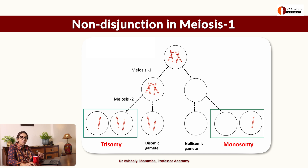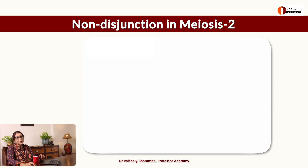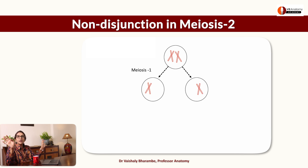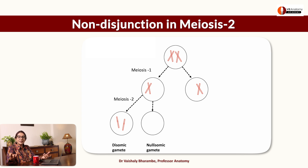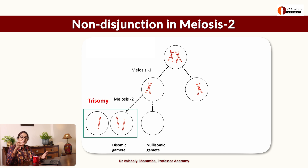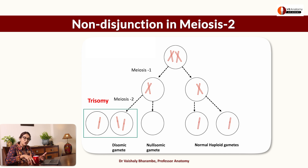Let's see if non-disjunction in meiosis 2 also produces trisomy. Normal parent cell, normal meiosis 1 — chromosomes segregate into daughter cells normally. This time, however, when meiosis 2 occurs, there is no segregation of chromatids — both chromatids go to the same daughter cell, forming a disomic gamete. The leftover cell is nullisomic. When there is fusion with a normal gamete, trisomy is produced. This is how non-disjunction in meiosis 1 or meiosis 2 produces trisomy or monosomy.